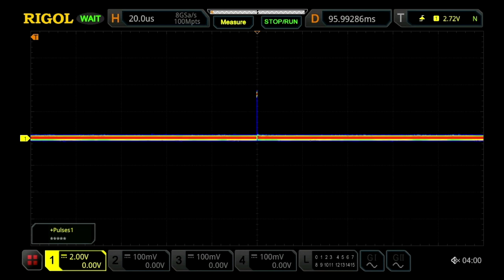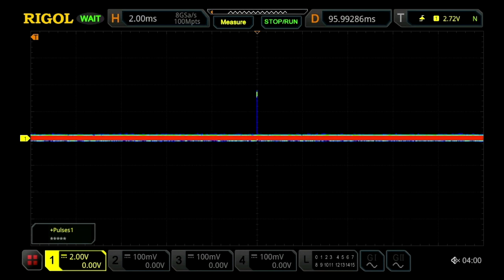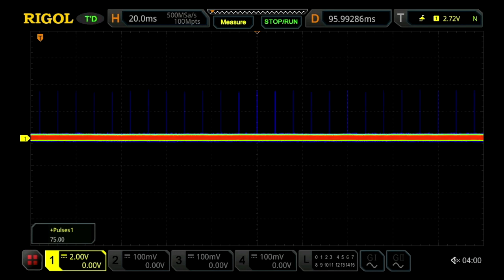We go out to the same 20 milliseconds per division. We now see the whole series of 25 pulses and we're accurately measuring 75. This is because with 100 million point memory depth and the precision measurement mode, we can clearly capture all 75 pulses. That's 25 sets of the triple pulse.